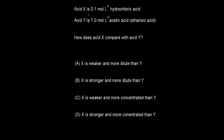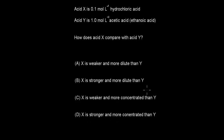Next question: Acid X is 0.1 mole of hydrochloric acid. Acid Y is 1.1 mole of acetic acid. How does acid X compare with acid Y? A) X is weaker and more dilute than Y; B) X is stronger and more dilute than Y; C) X is weaker and more concentrated than Y; D) X is stronger and more concentrated than Y. Pause and attempt.